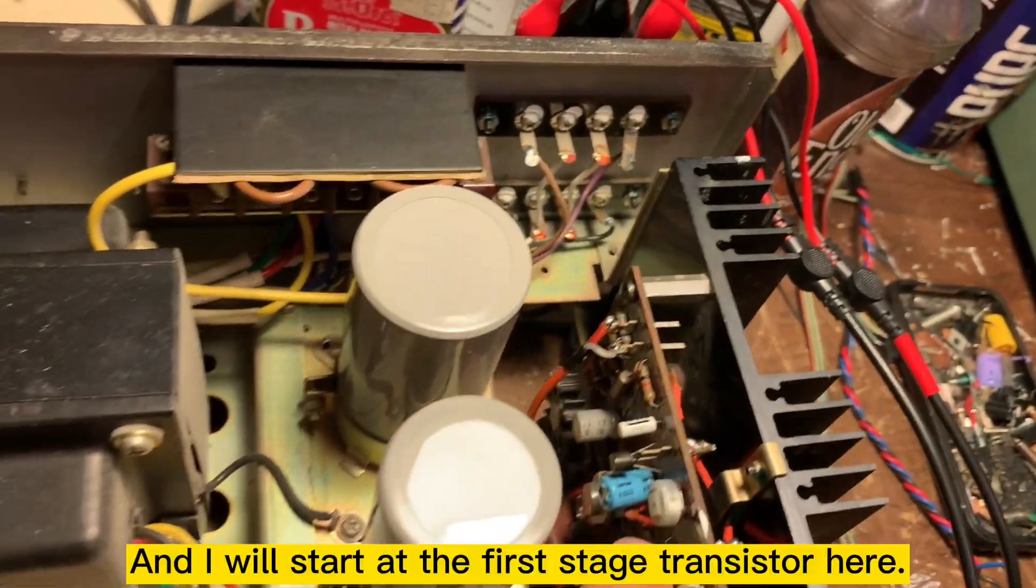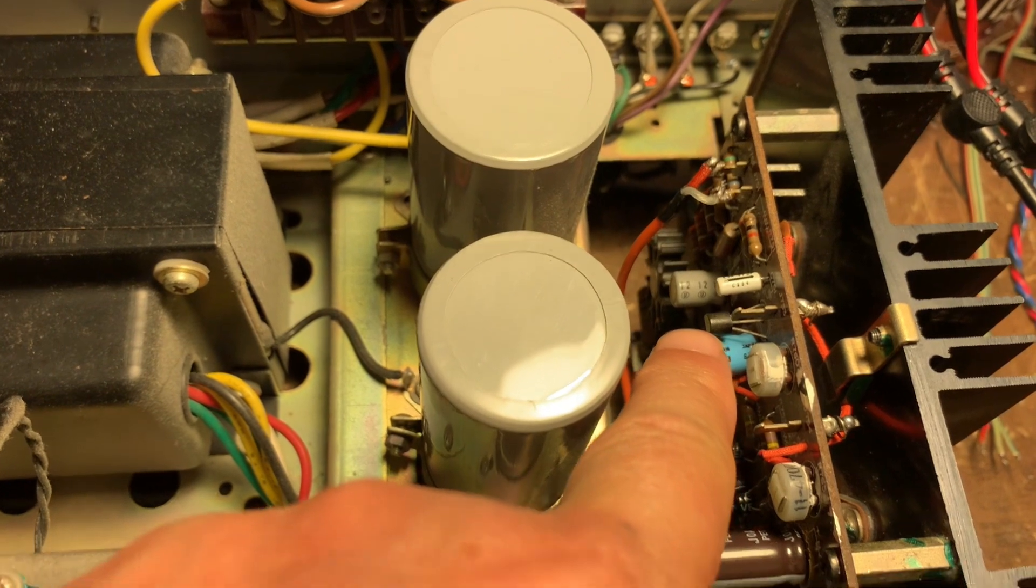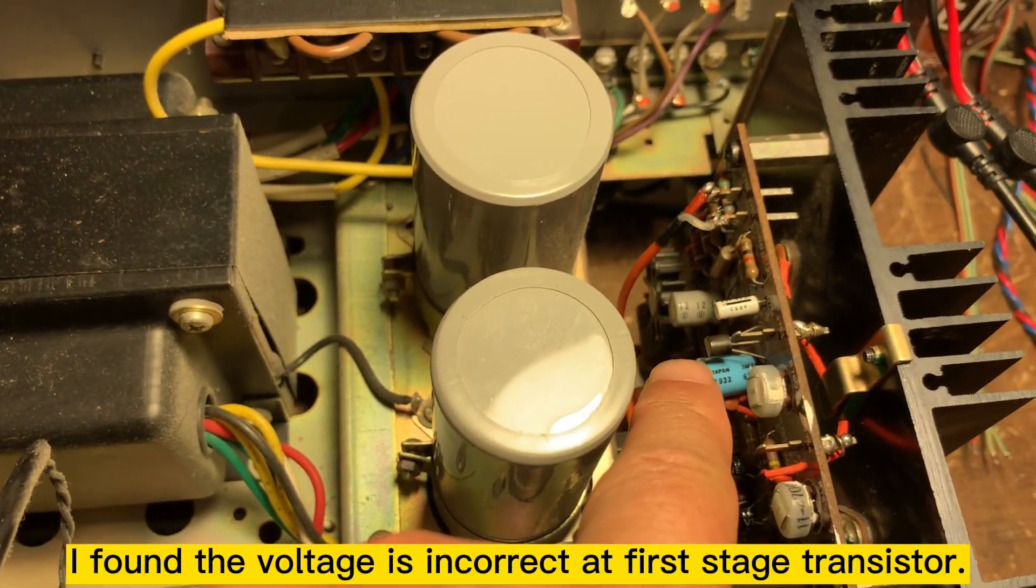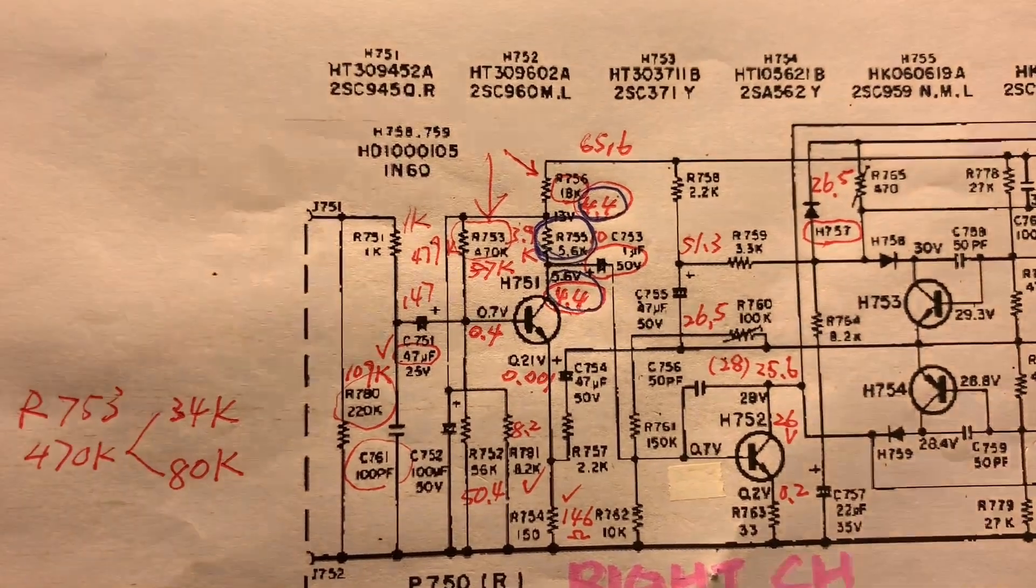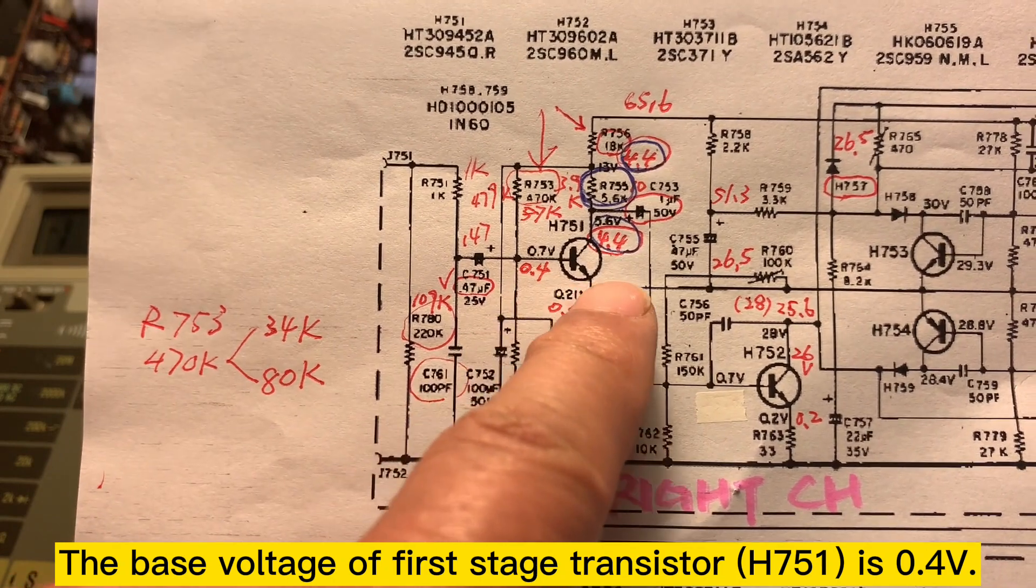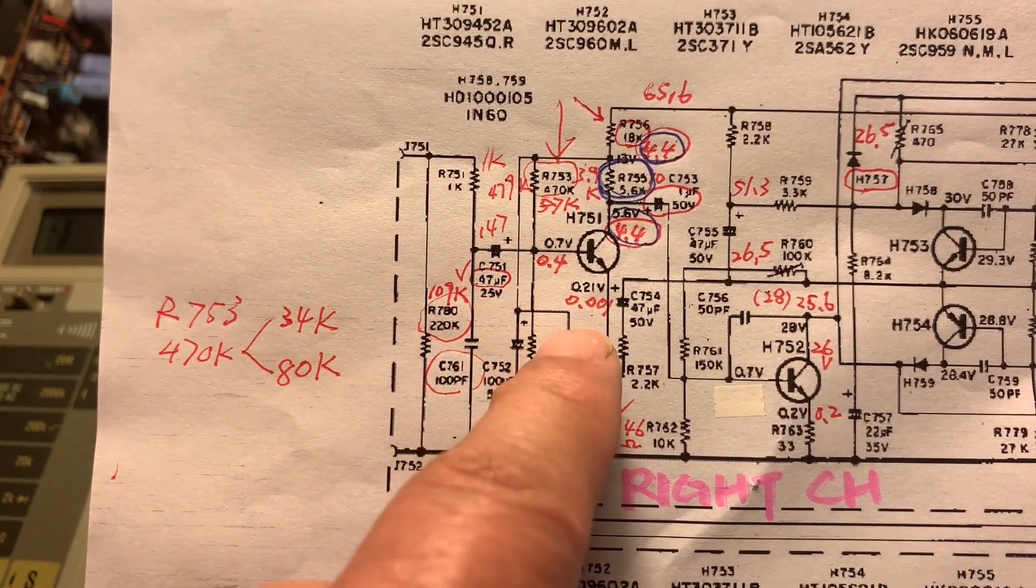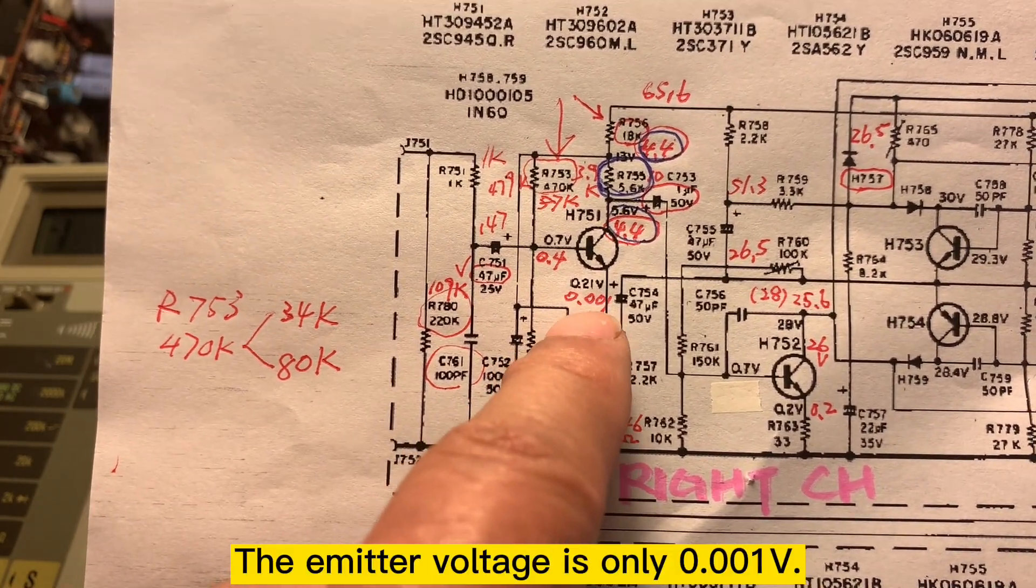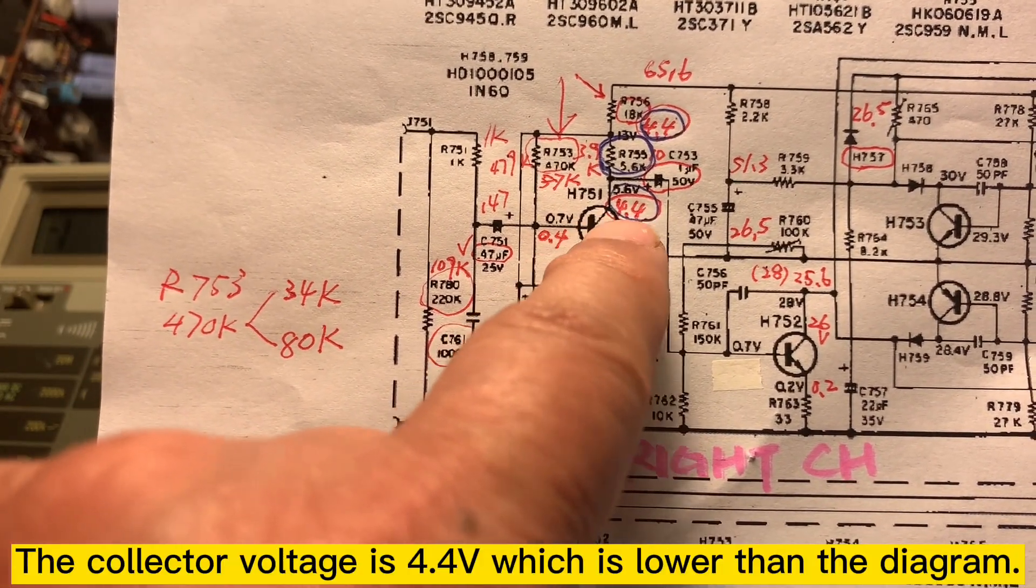And I will start from the first stage right here. The transistor, I just measured it and the voltage is incorrect. So I'm going to check the first stage there too. After I check the voltage, the transistor, the first stage here on the base shows 0.4V and the emitter shows 0.01V and the collector shows 4.4V, which this voltage is too low.